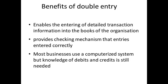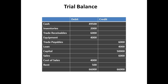Double entry ensures there are details for each transaction that can be referenced easily. It also provides a checking mechanism to see that entries have been made correctly. Although computerised systems are used widely, an accountant will still need to have a full knowledge of debits and credits to check that the entries were made correctly. Here is the first simple check that is made: each account is listed together with its current balance. It follows that if the debits and credits for each transaction should balance, the total debits and credits should balance.